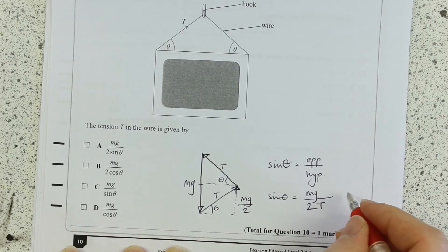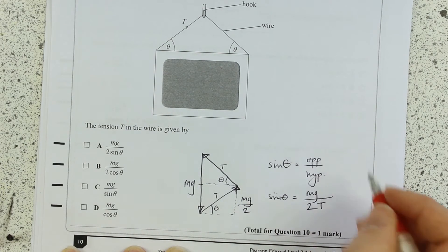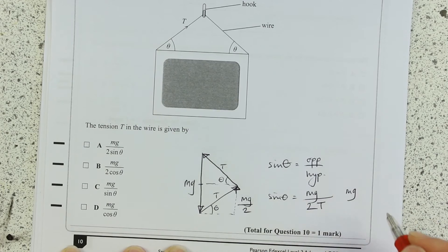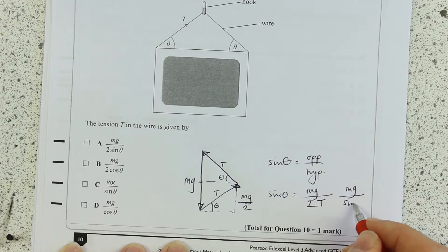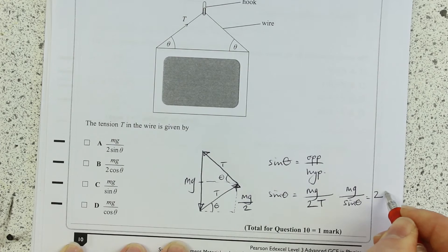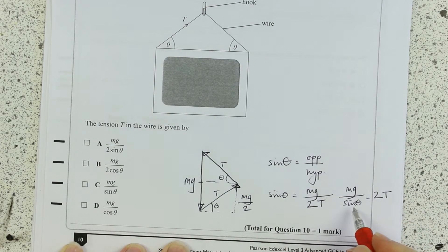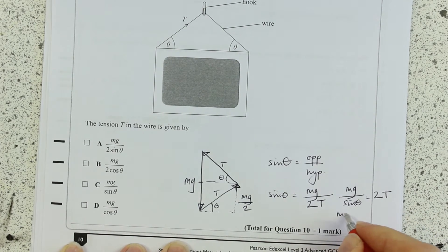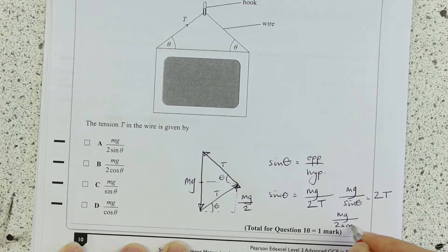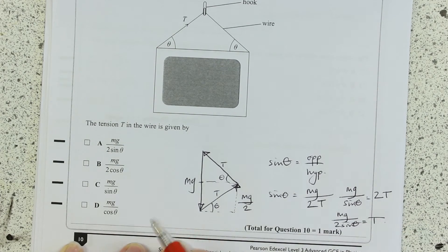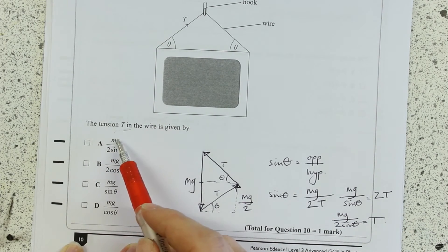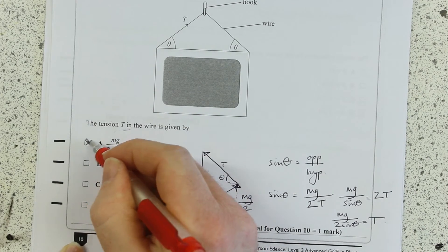And what is the hypotenuse? It's T. So now I'll just rearrange for T. Take my Mg over, so Mg over sine theta is 2T. And then divide by 2 to get Mg over 2 sine theta equals T. So what is T? Mg over 2 sine theta. Hey, presto.